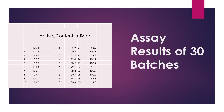Here are the assay results of 30 batches. Assay results are the content of active ingredient in percentage for the 30 batches. We have selected these 30 batches for trend analysis. We will now import this data for the calculation of the upper and lower limits for trend analysis.